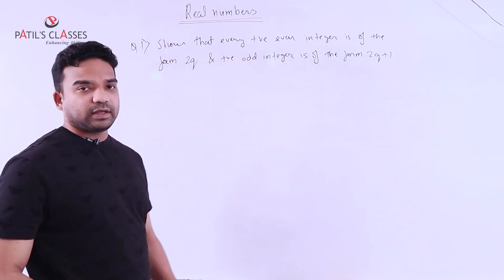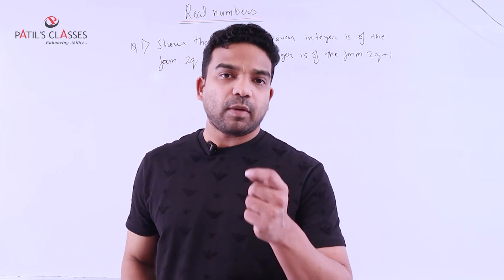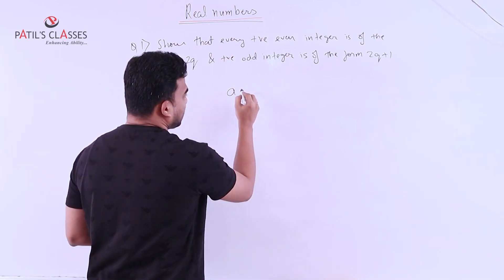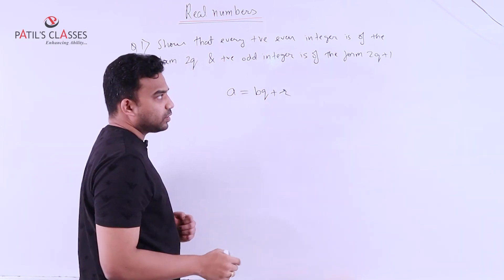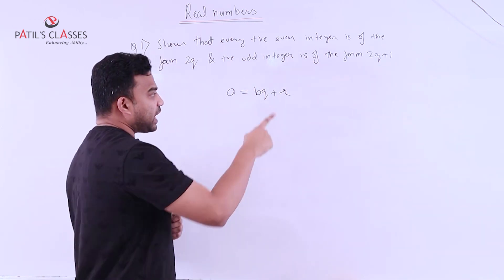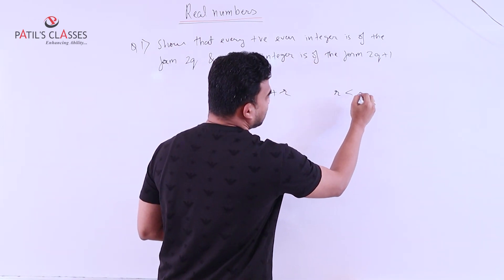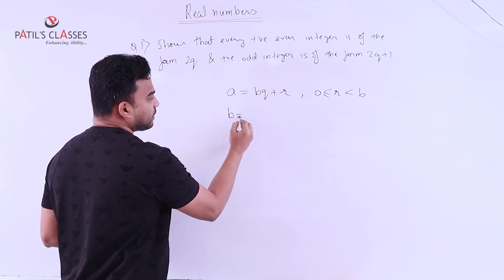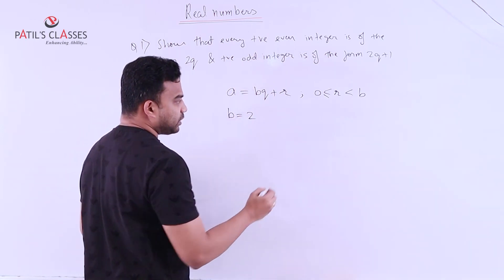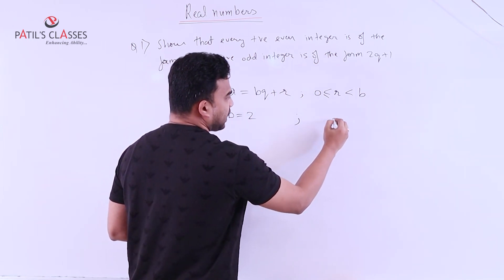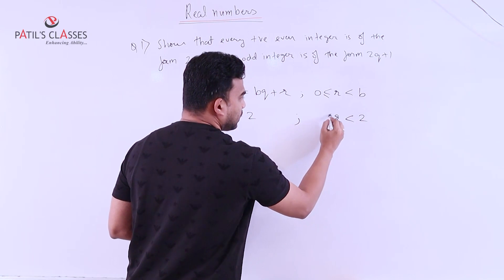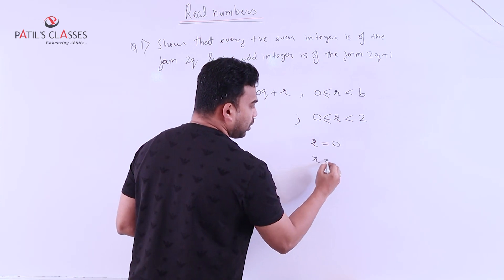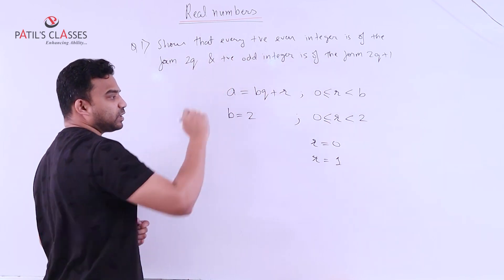The moment we get this question asking us to prove in the form 2q and 2q plus 1, Euclid's division algorithm says A equals bq plus r. Now, there exist q and r which must satisfy the condition that r should be less than b but greater than or equal to 0. In this particular question, the value of b comes out to be 2. If b equals 2, then r has to fulfill that r should be less than 2 but greater than or equal to 0. So r can take values 0 or 1.